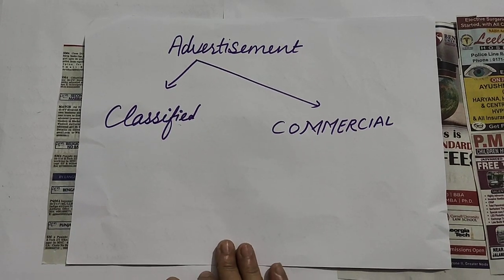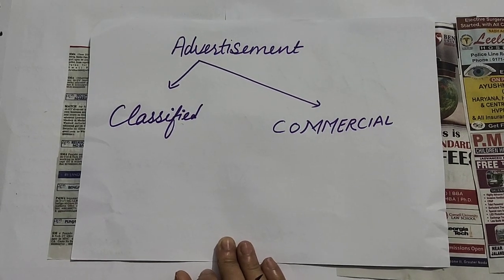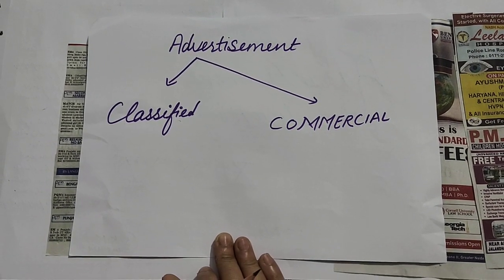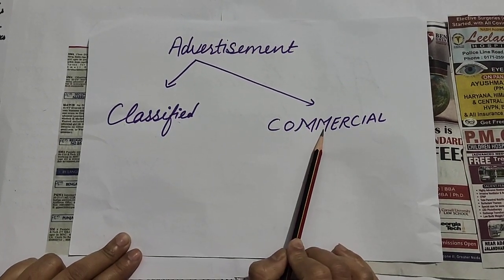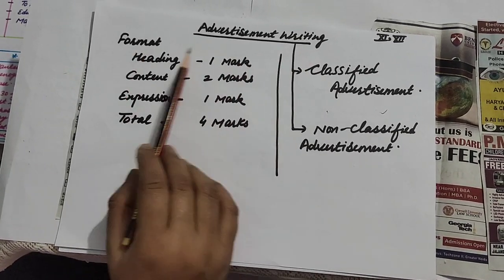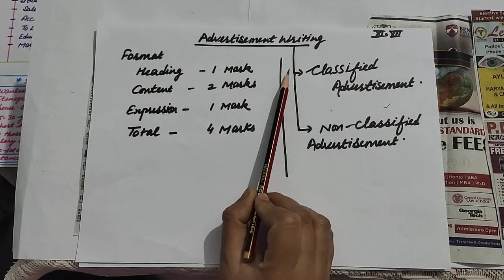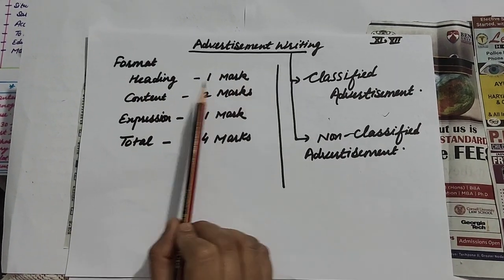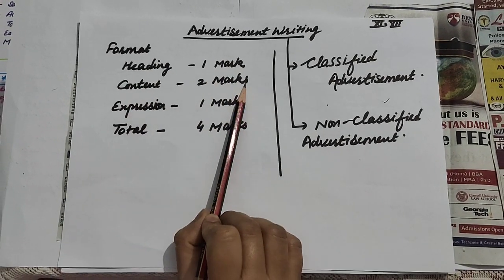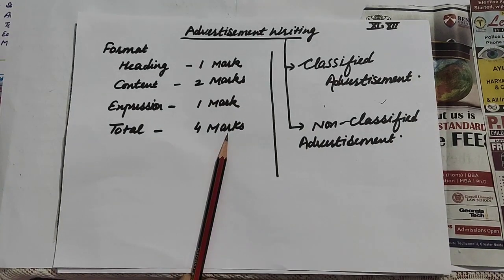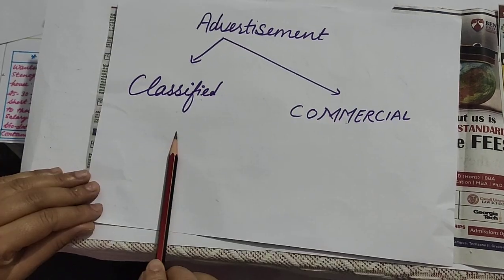Students, this is Neha Sharma, once again with you. Today we are going to do advertisement writing for class 11th and 12th. Advertisement is of two kinds: number one is classified, and second one is commercial. The format of advertisement writing is very important, so always keep that in mind. Heading is of one mark, content is of two marks, expression is of one mark — total four marks. This is a short writing type of question in your examination.